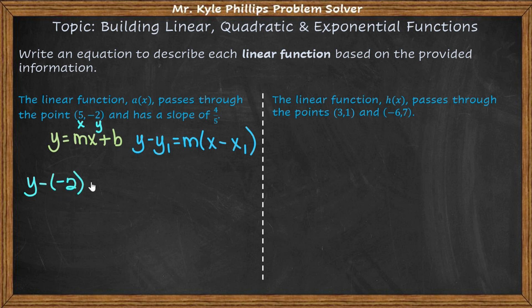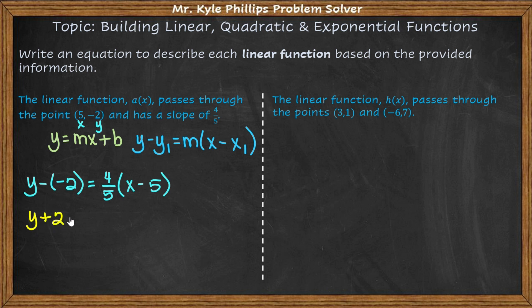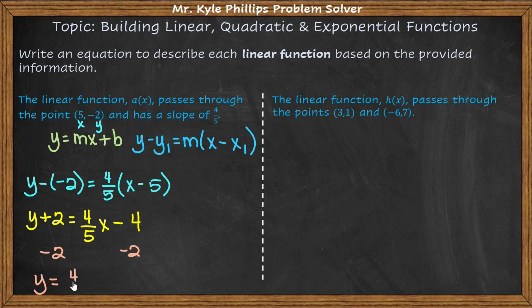We have y minus y1, so that's negative two, meaning y minus negative two. This equals the slope of four-fifths times x minus x1, where x1 is five. Simplifying: y plus two equals four-fifths x minus four. Now I want y by itself, so I subtract two from both sides. My equation is y equals four-fifths x minus six. I have my slope and y-intercept, obtained from just a slope and a coordinate point.